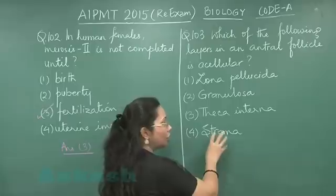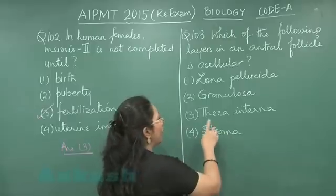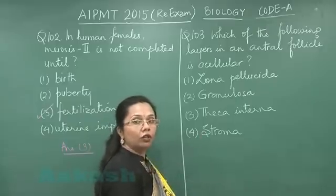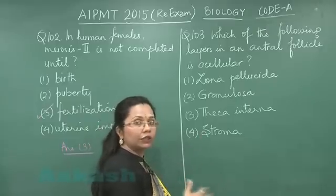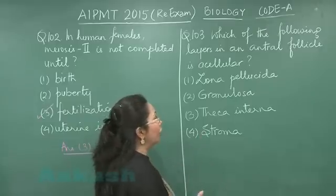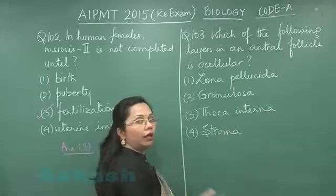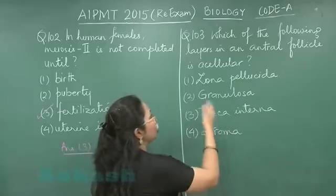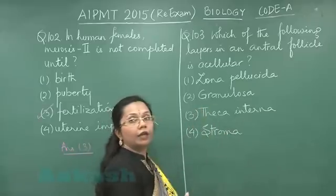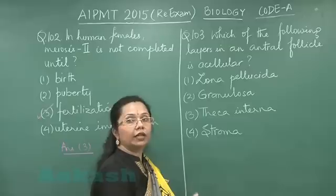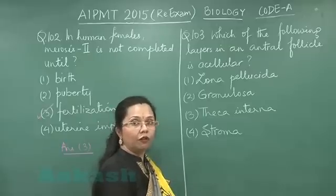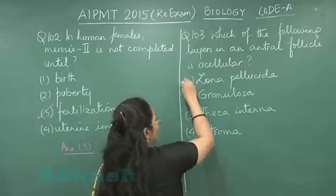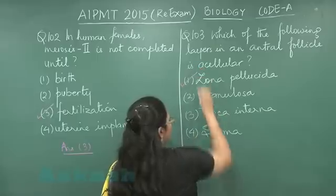Stroma is simply the connective tissue filled in the ovary, so it has nothing to do with the follicle. Theca interna is a cellular layer made up of theca cells that covers the follicle. The granulosa layer is again made up of granulosa cells, while zona pellicida is a glycoproteinaceous layer secreted by the oocyte itself. So this is the acellular layer, and the answer would be 1.